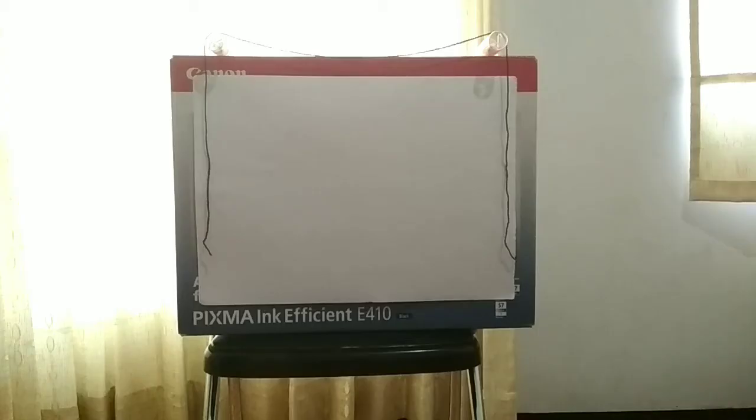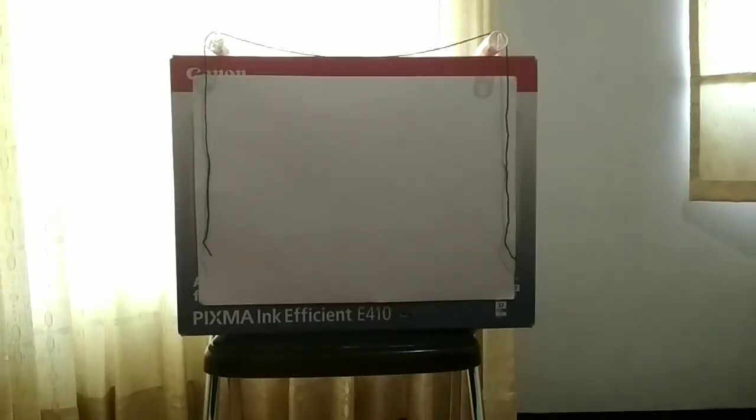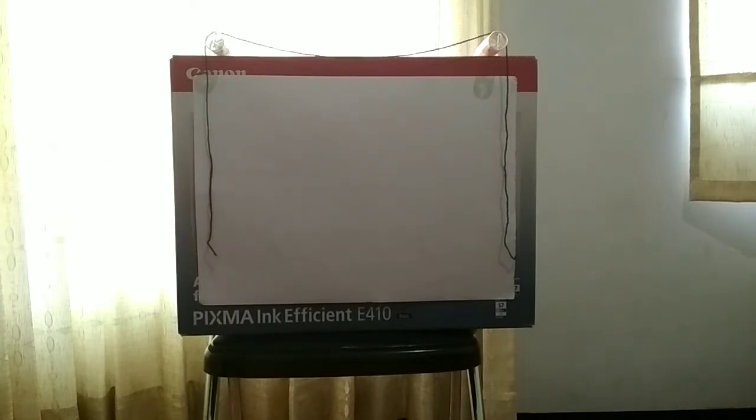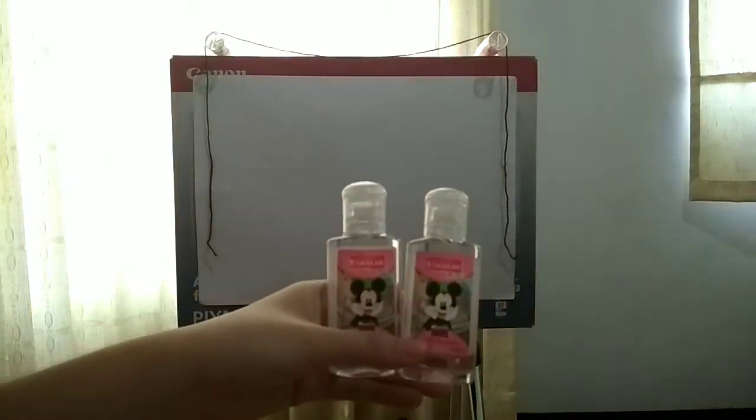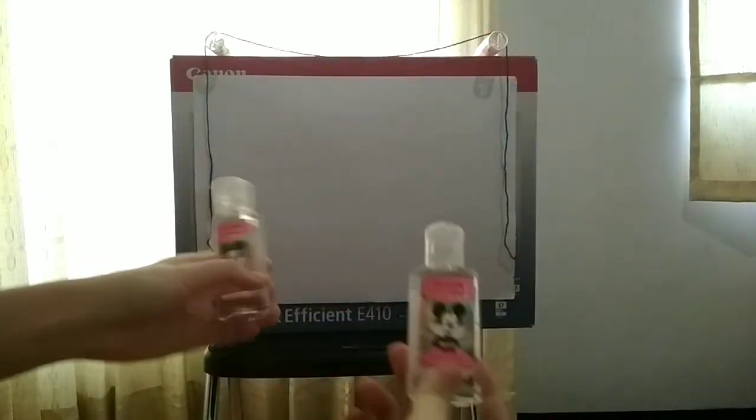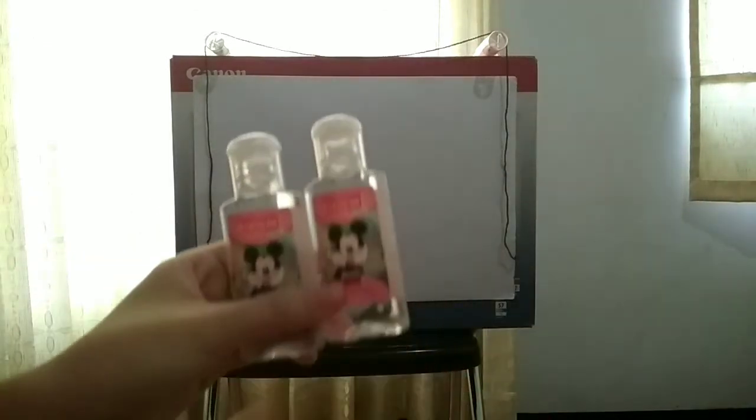So first, for setting up the Gravesand's apparatus, what I did here was I just simply taped my pulleys on top of the cardboard box, and I slinged this one-meter string onto it. Next thing what we're going to do is we're going to tie on these identical masses onto each of the strings, so I'll just do that.